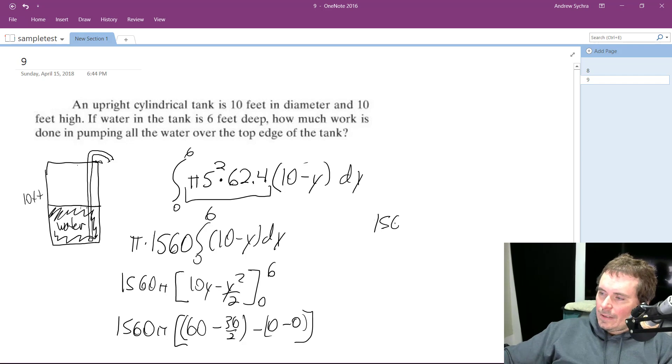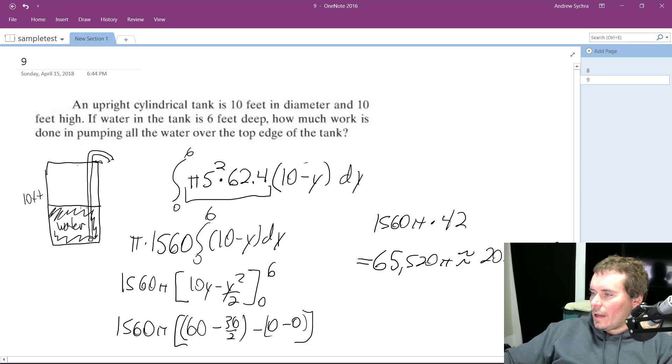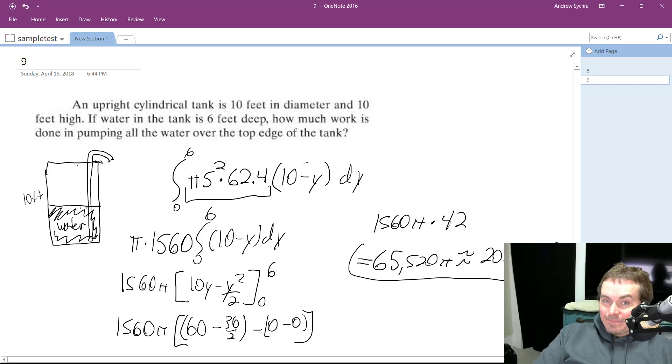So 1560π times 42. We end up getting 65,520π, or approximately 205,837 foot-pounds. Okay, that's it. I hope this helped you out. Thanks for watching.